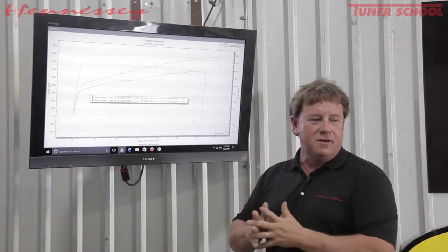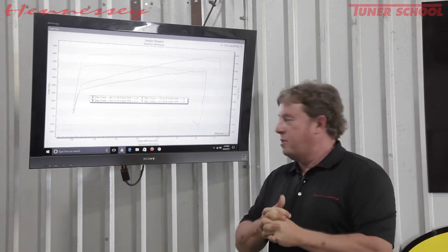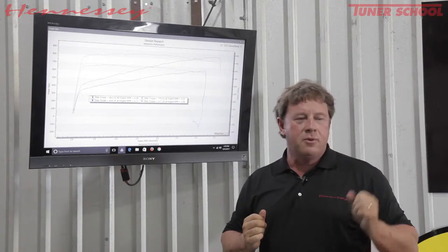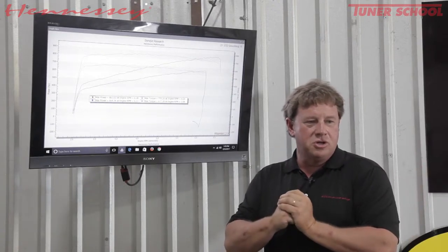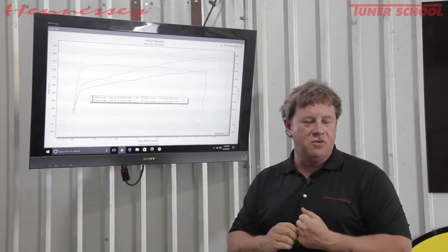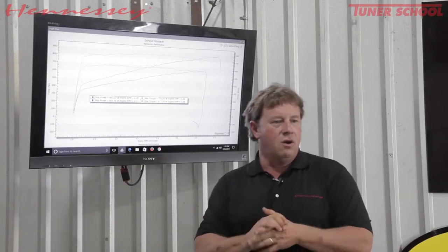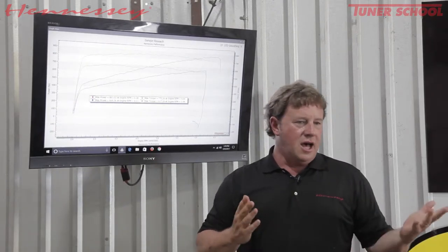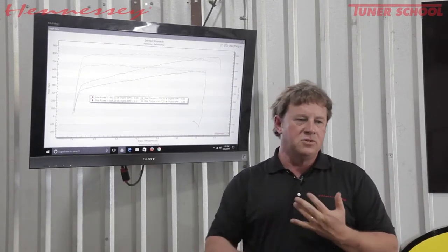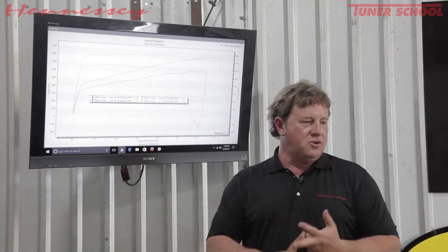Enter our HP1000 upgrade with the 4.5 liter supercharger, running about 14 pounds of boost on 93 octane pump fuel. This has also got our long tube stainless steel headers, high flow cats, high flow intake, larger throttle body, fuel system, fuel injectors, retuned computer.